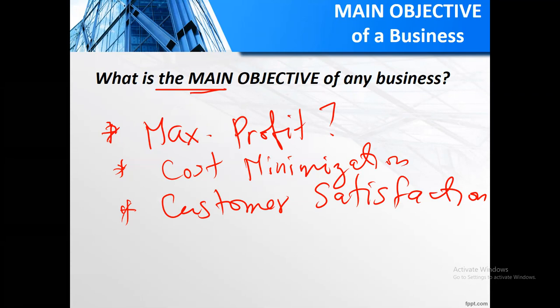Profit maximization is an important objective but should not be the main objective. Customer satisfaction is also critical — without customers, where would the company get its resources and sales? Companies that lose customers eventually die, as illustrated by Nokia, which once controlled over 90% of the mobile phone market but failed to innovate and lost its customer base.